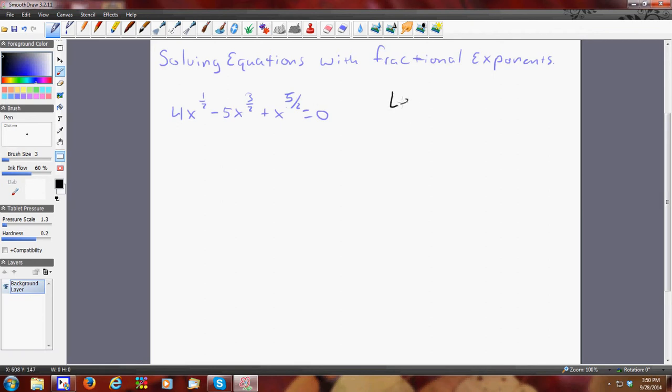So I'm going to say let w squared equal x to the 5 halves. Well, if w squared equals x to the 5 halves, then just w would be the same as x to the 3 halves. Oh, and that's coincidentally quite excellent because that's what I have. And that would mean that w to the 0 would be x to the 1 half.